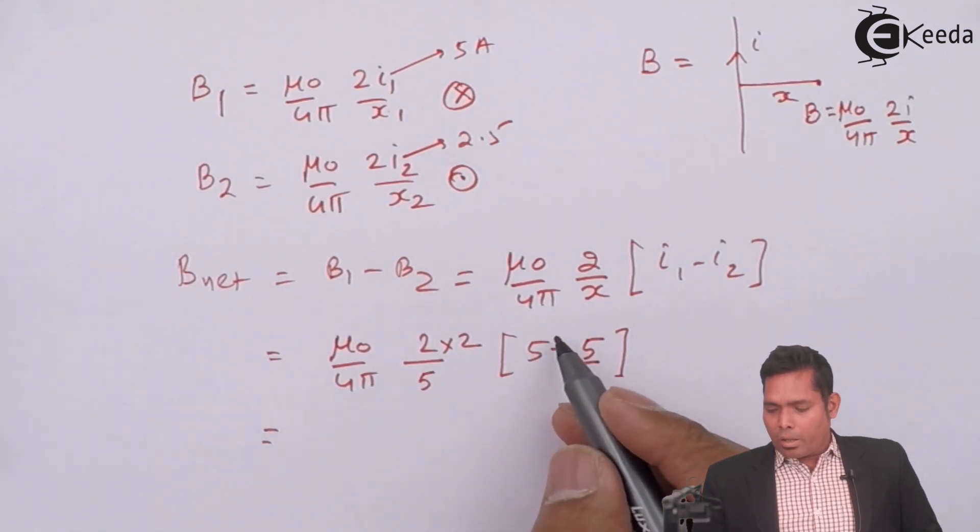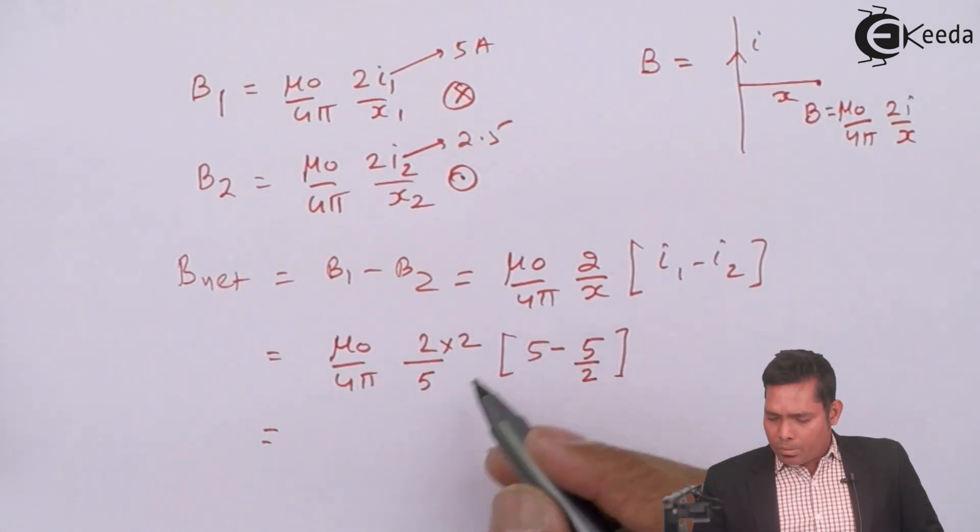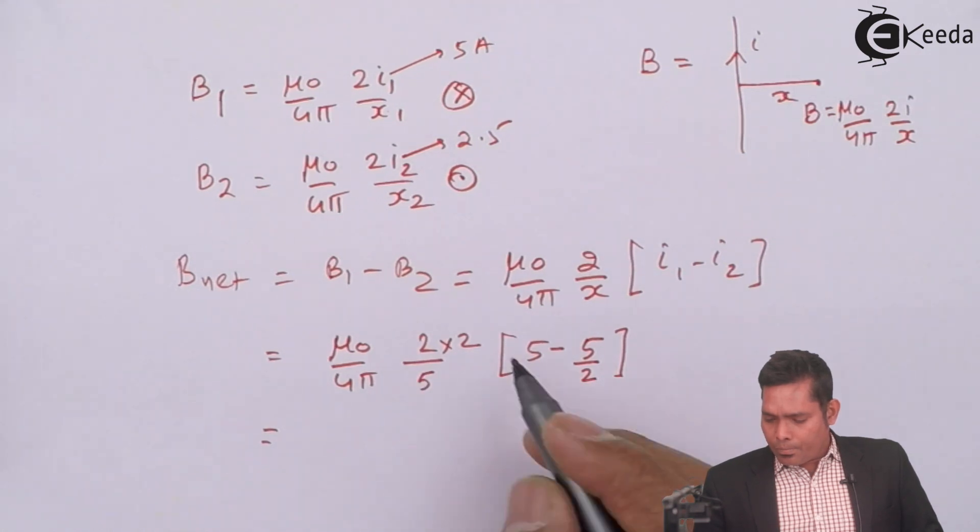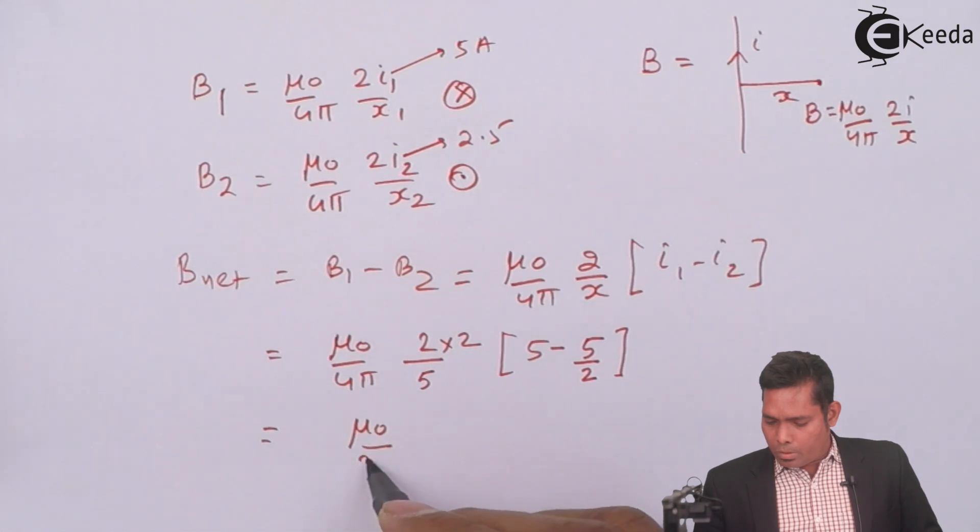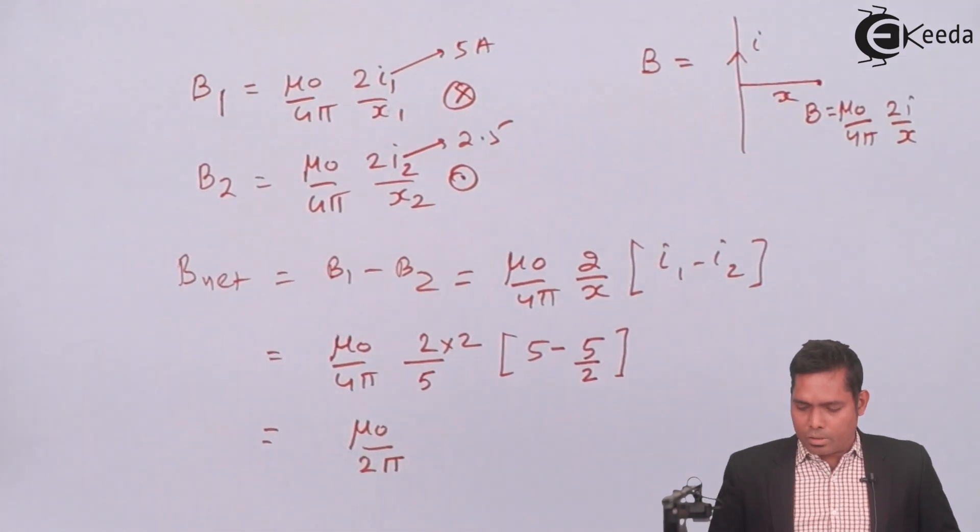If you solve this, this is 10 minus, this is ultimately 5 by 2. This 5 by 2 cancels, 2 cancels. This is left to 2. This goes out. This is mu 0 upon 2 pi. This is the answer to this question.